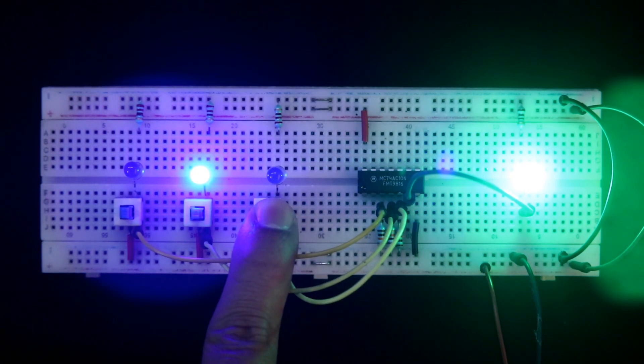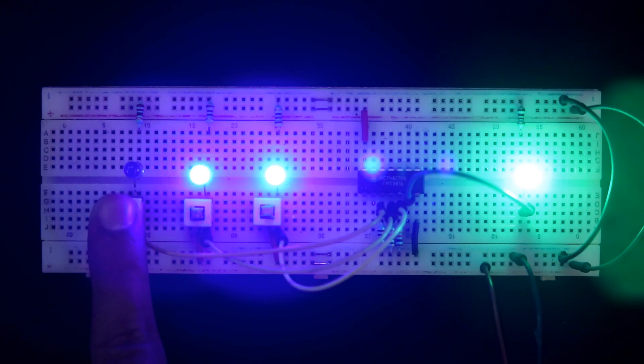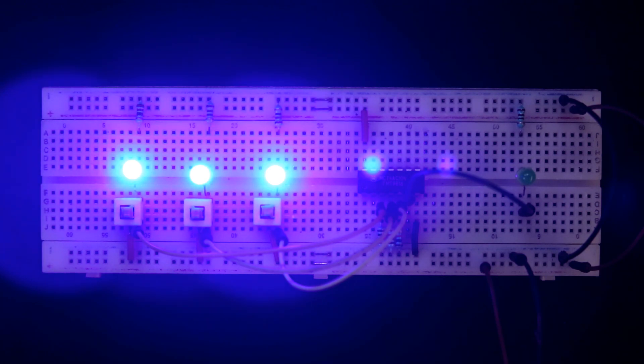010 output is 1, 011 output is 1. When all 3 inputs are high or 1, then only we will get 0 in the output. So this thing we are going to see in this video. So let's get started.